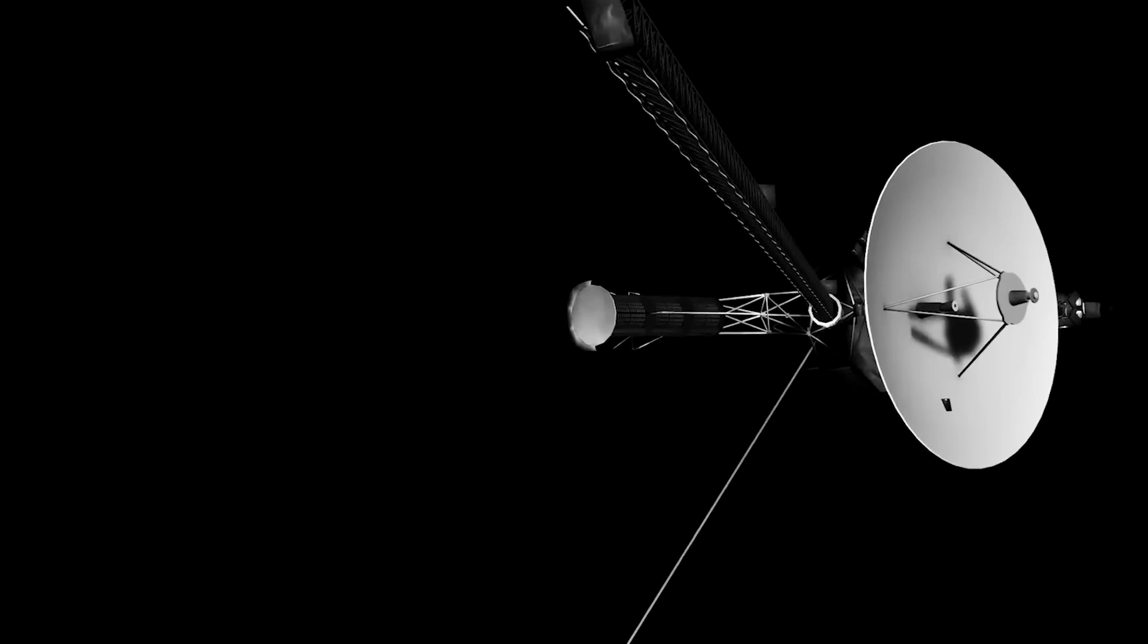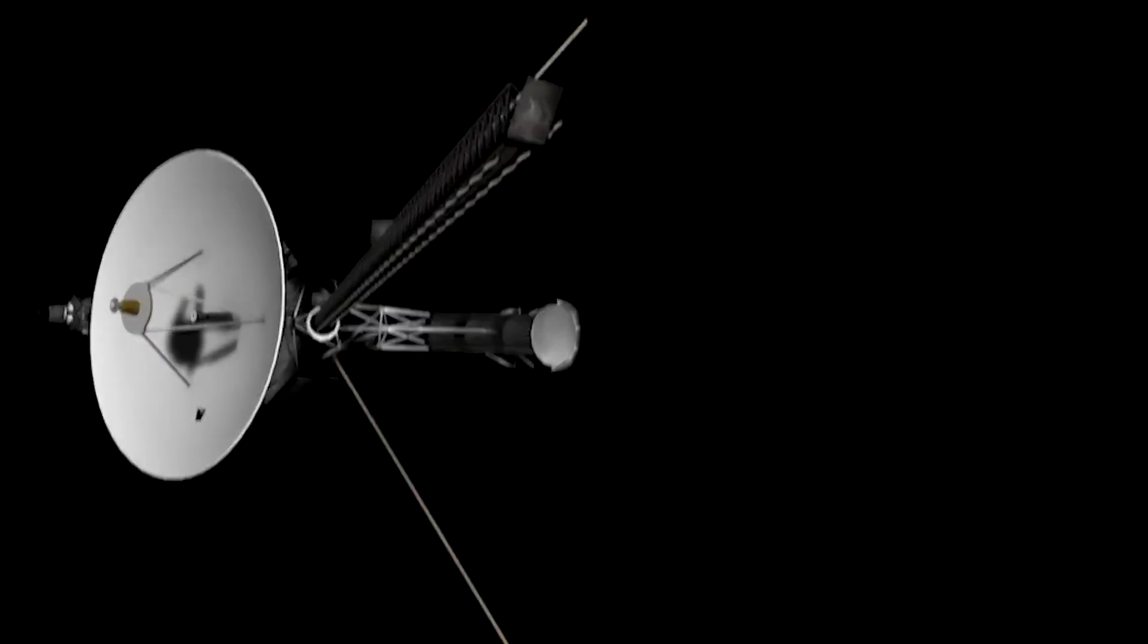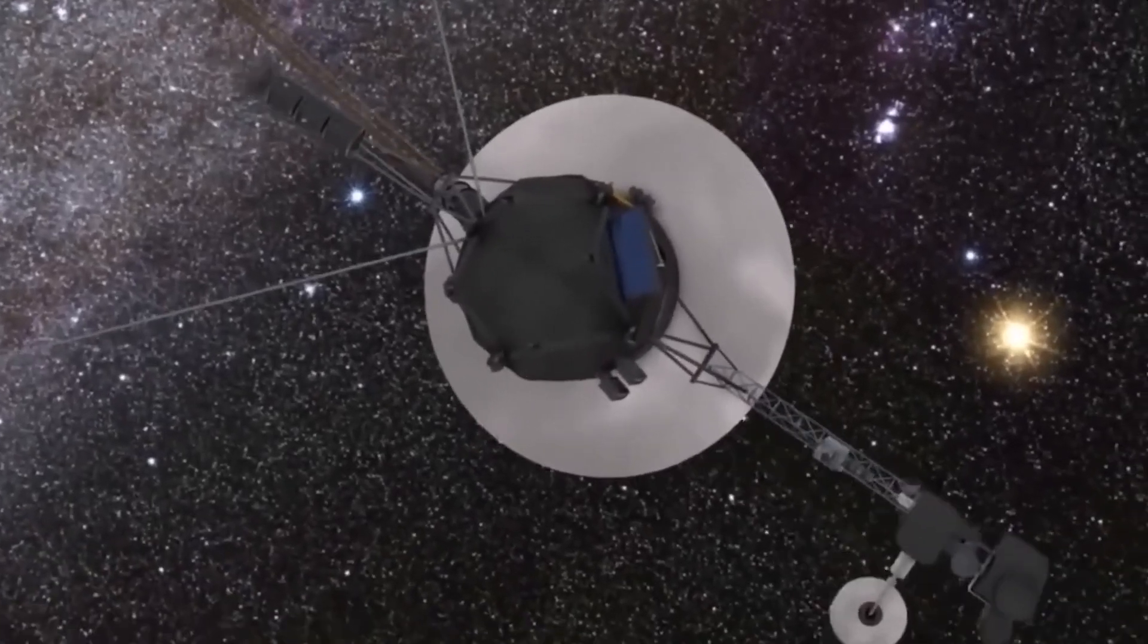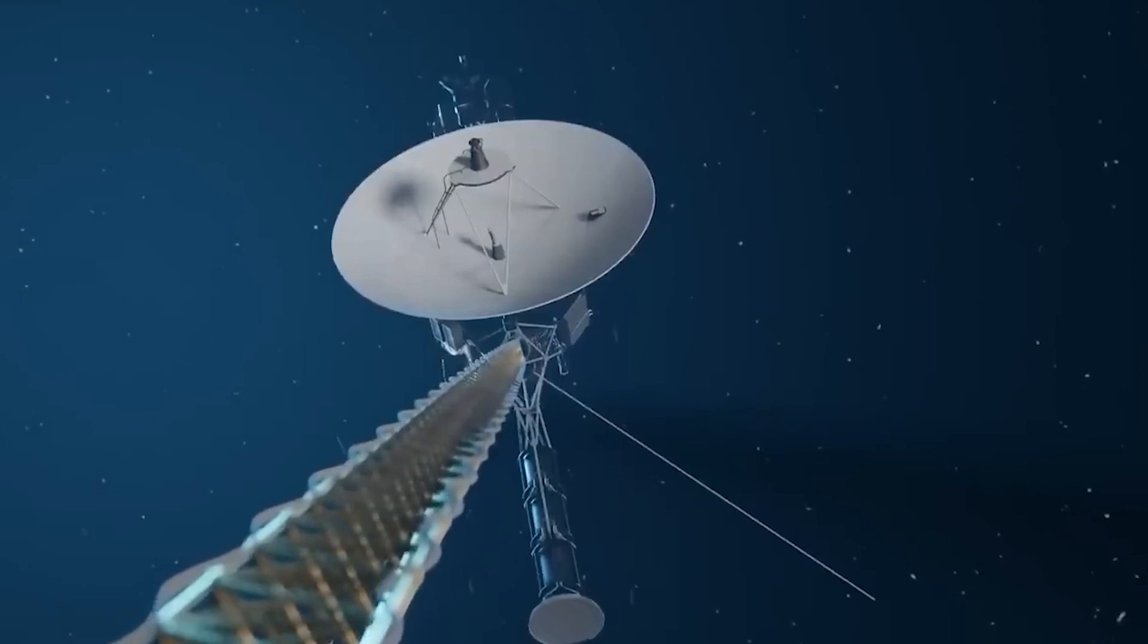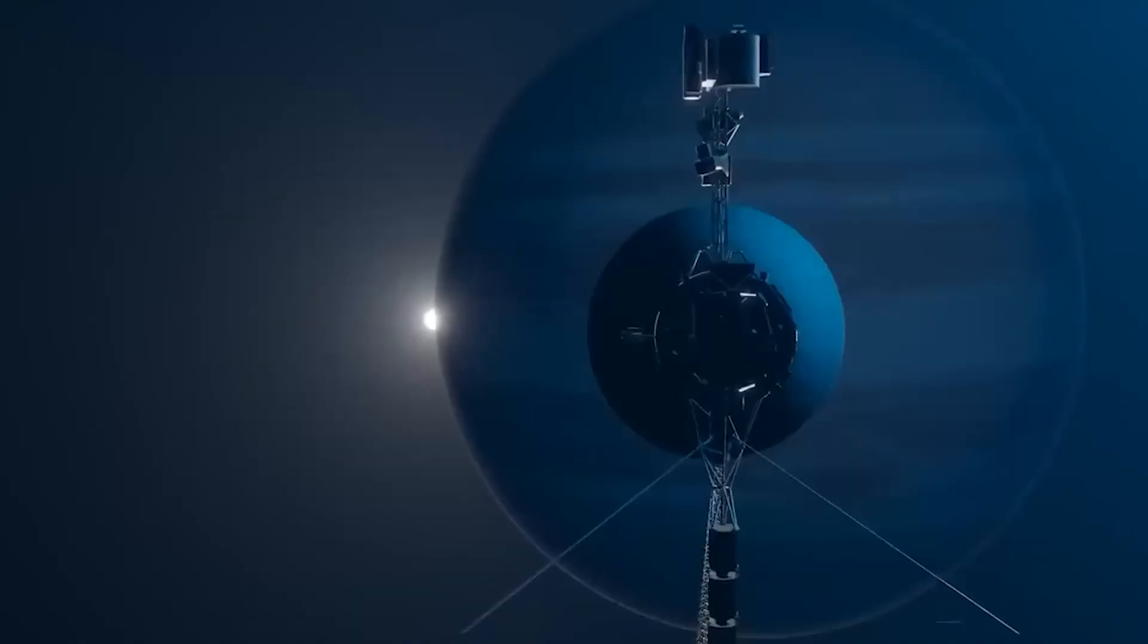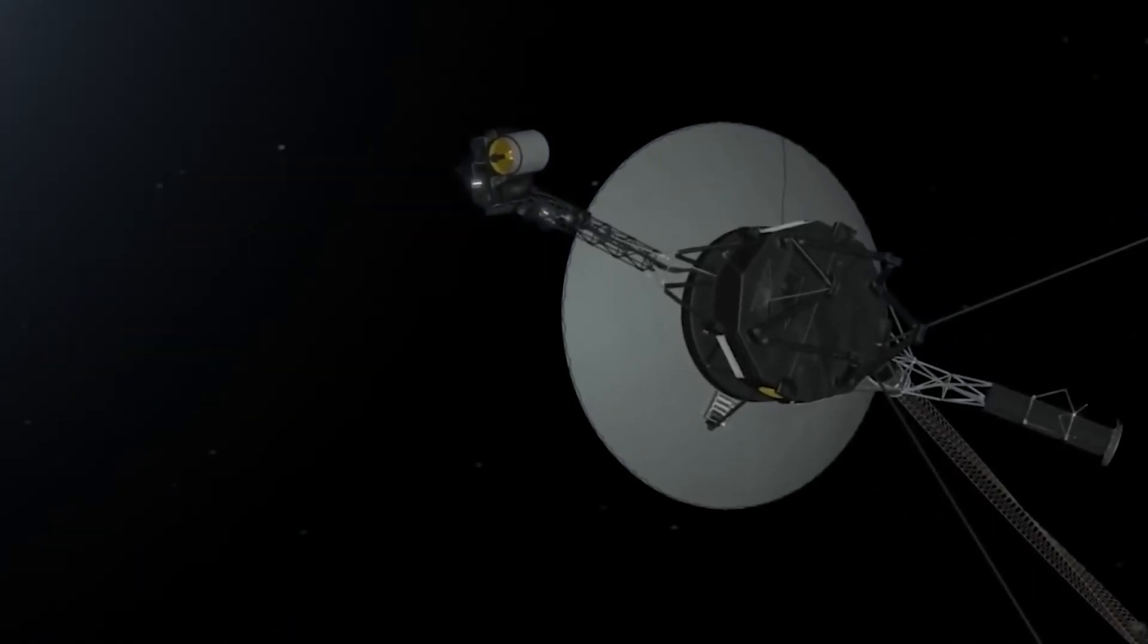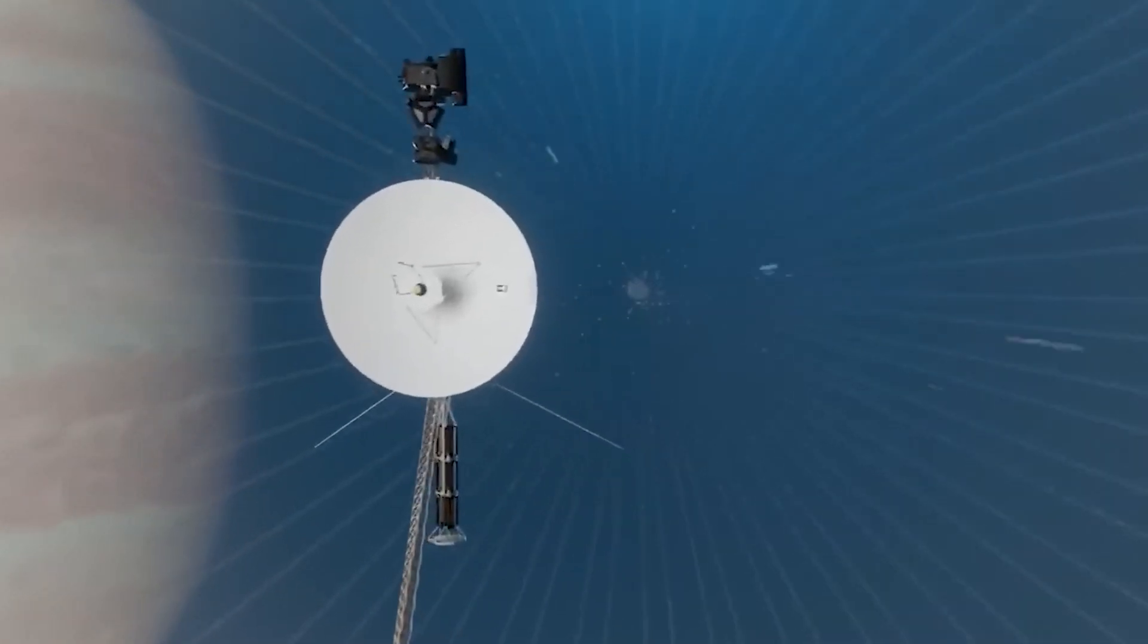Engineers acted quickly and sent a command to Voyager 1 instructing the AACS system to shift to the correct computer to transmit the telemetry data. Although the solution was low risk, it required a great deal of patience because of the significant delay caused by the distance between Earth and Voyager 1. Radio signals take nearly 22 hours to travel back and forth, so the troubleshooting process required careful coordination.